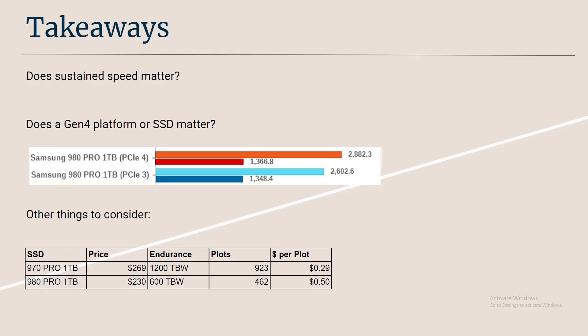So, does sustained speed matter? It matters, but it's more relevant for parallel plotting. With Mad Max plotting you're only doing one plot at a time, so that puts a different spin on things — the 980 Pro might be better in that case, and I'll make a separate video for that.